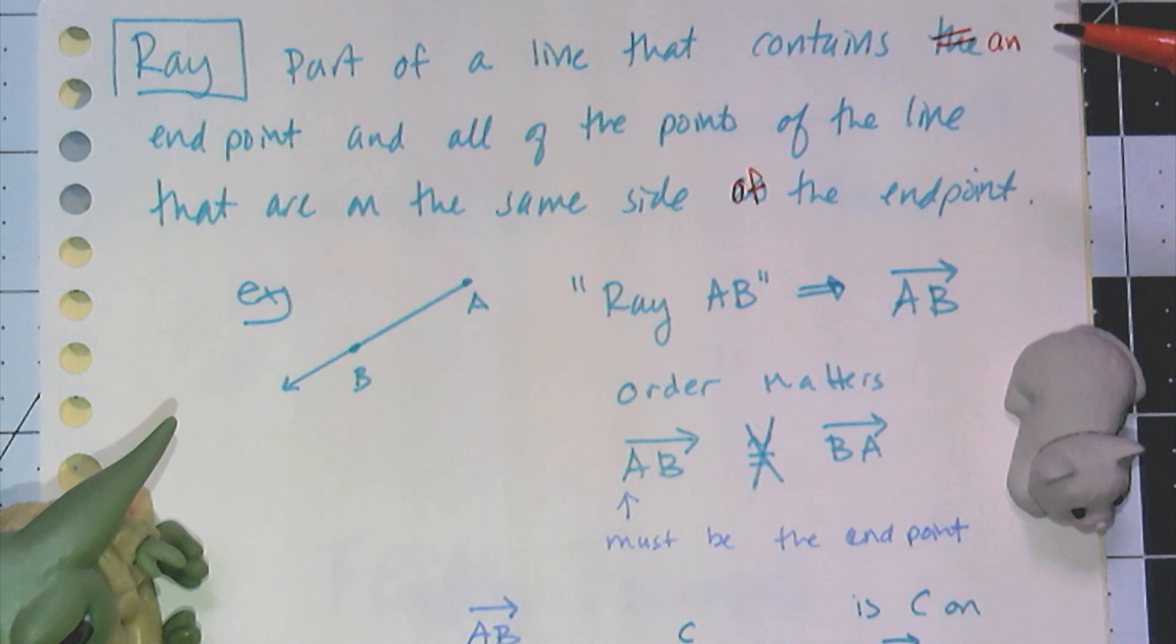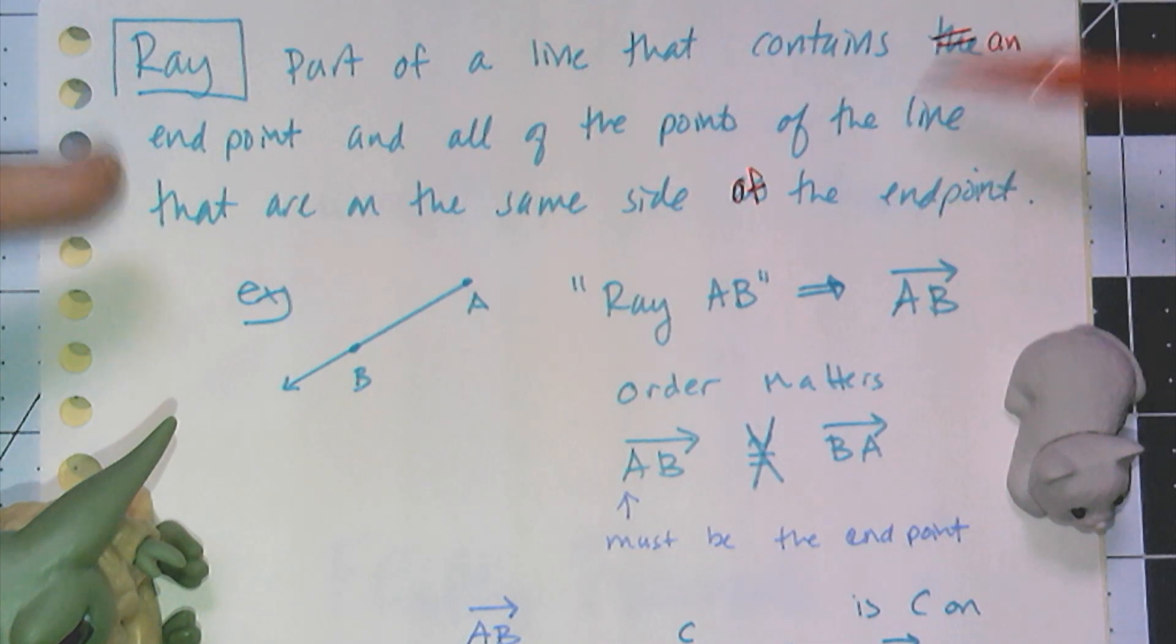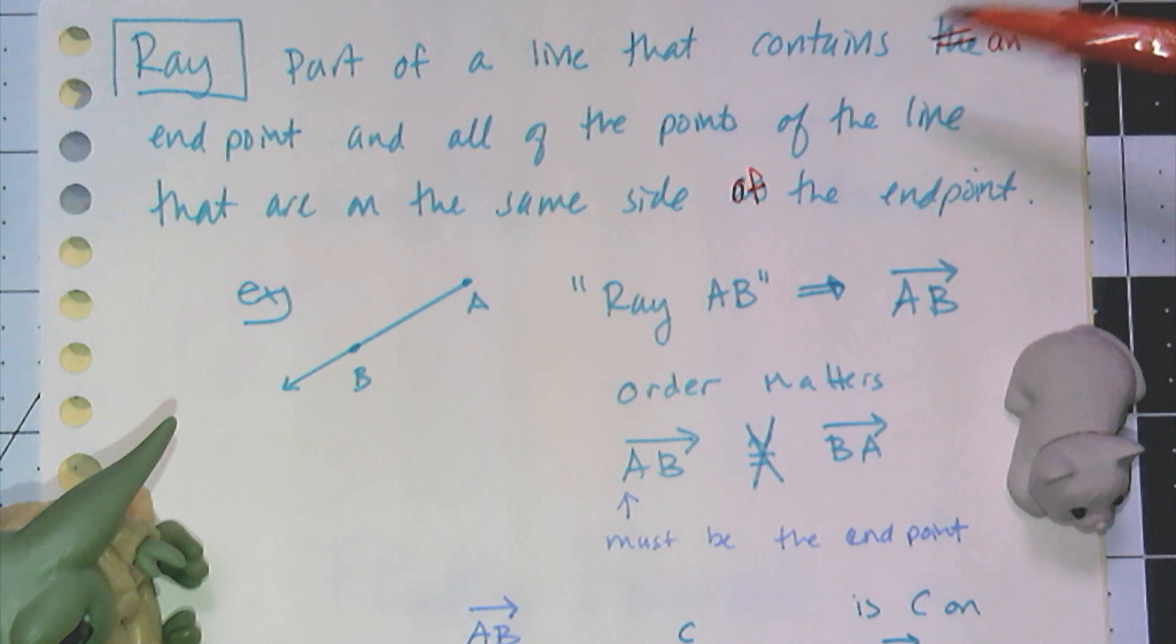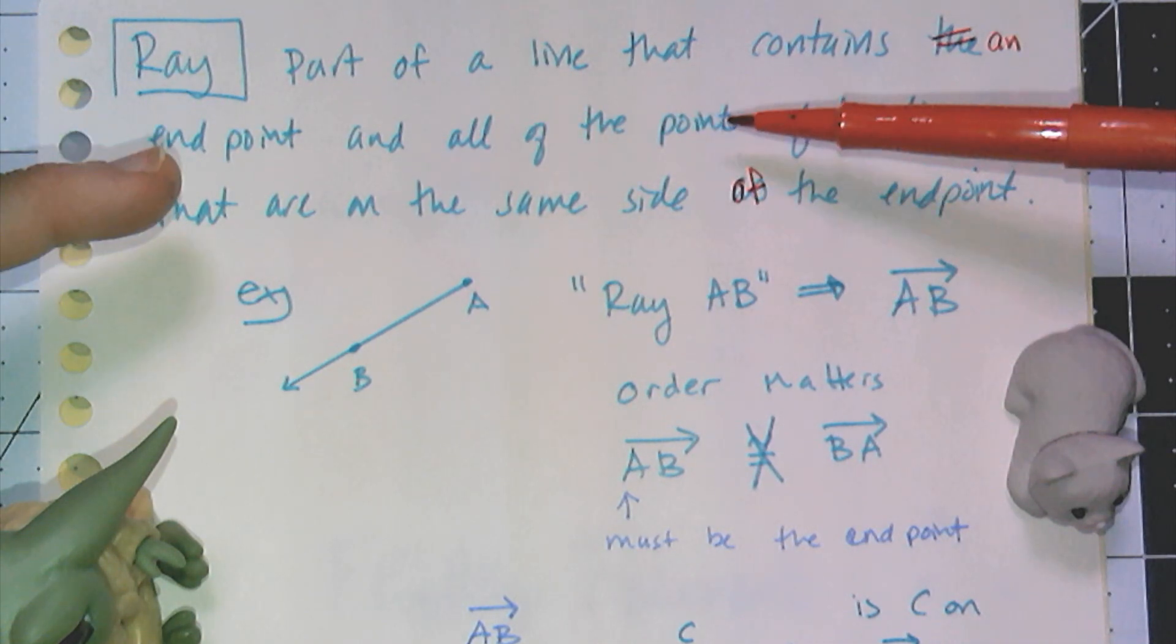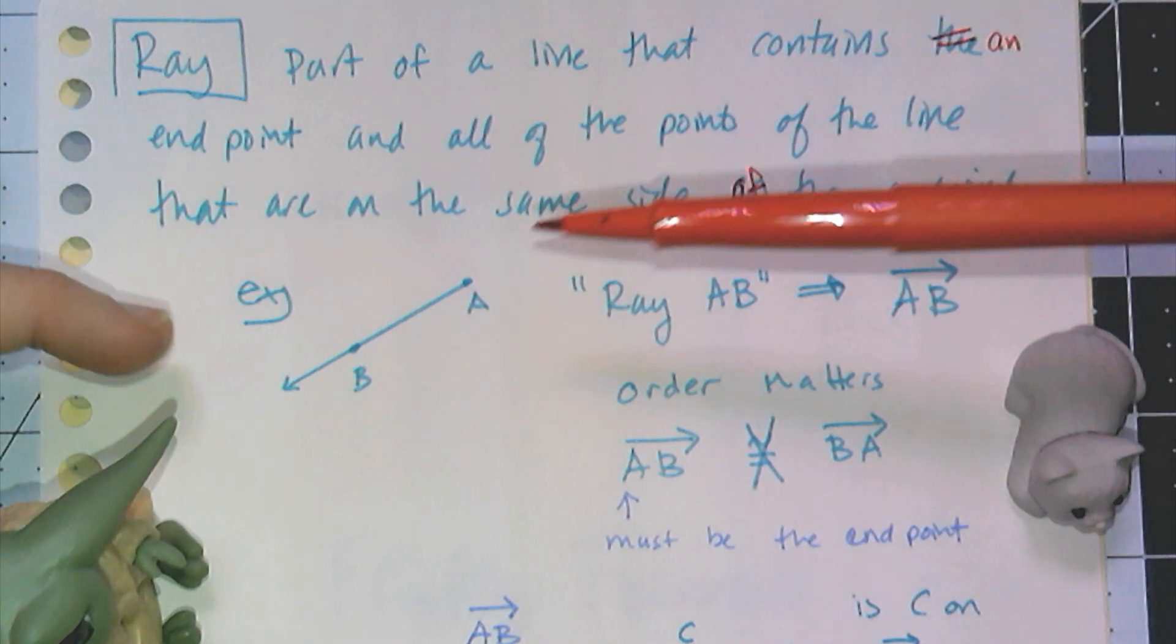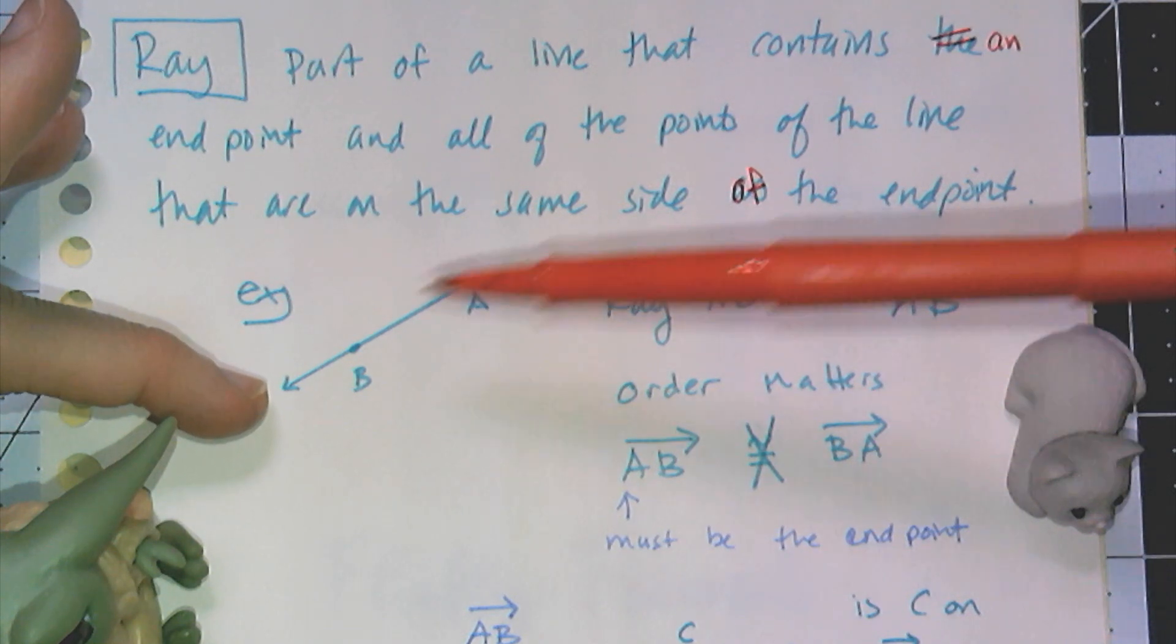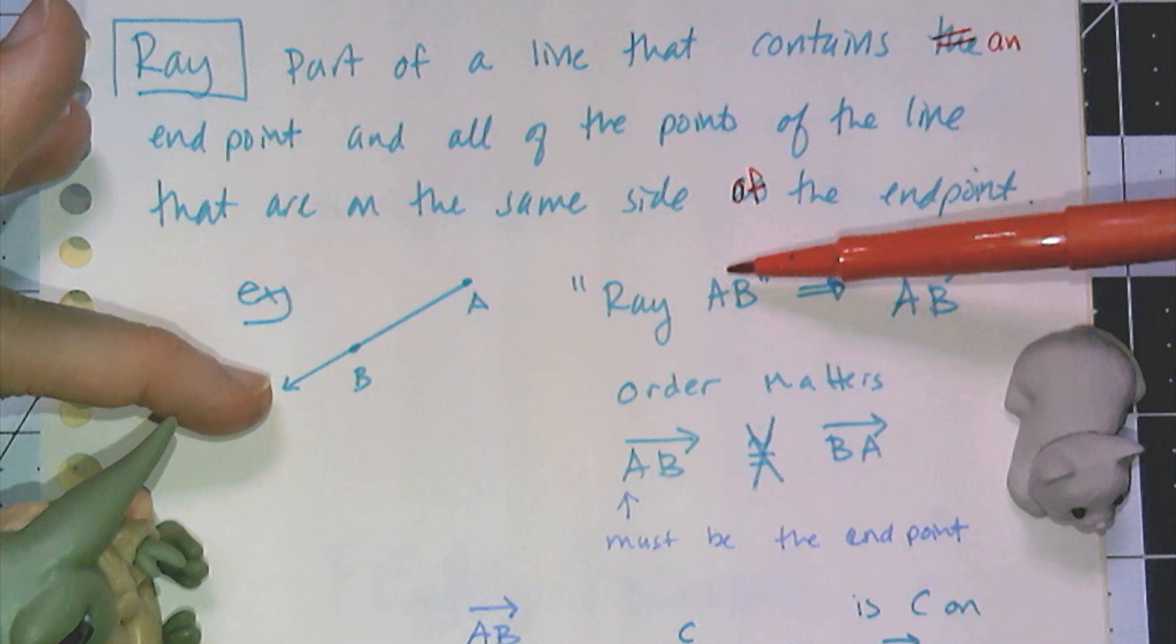Now we go on to the final part of one of our undefinable terms, and we're going to define the word ray. It's the part of a line that contains an endpoint that is on a line, and all of the points of the line that are on the same side of the endpoint. For example, this is the mathematical model of a ray. It has a point on the end and an arrow on the other side. This is called ray AB.